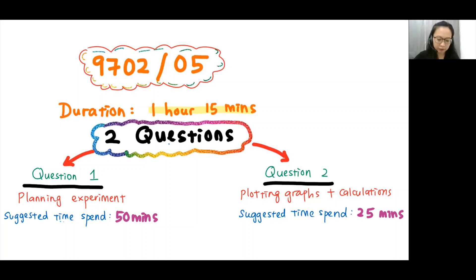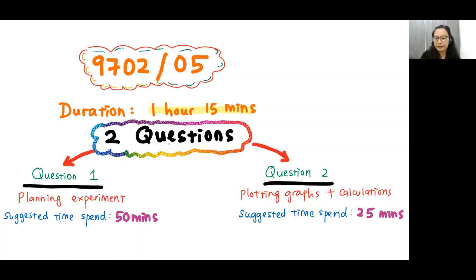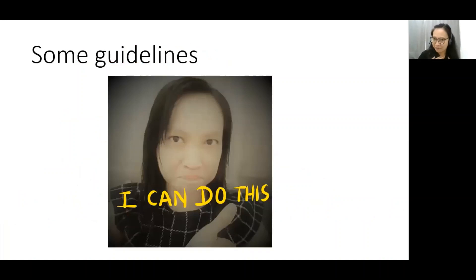Some students ask if it's possible to finish the second question in just 25 minutes given all the calculations involved. My answer is yes — when you practice enough, you'll find you can finish the second question within 20 minutes. My suggestion is to always start with the second question first and spend only 25 minutes on it, because for the first question you need a lot of time to think, plan, and consider the apparatus to use. Be confident and tell yourself you can do this.